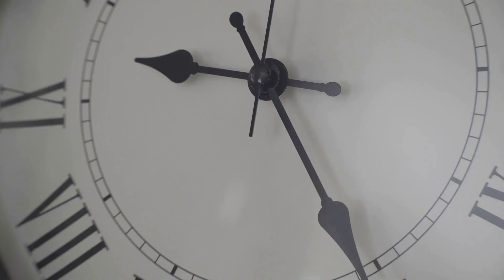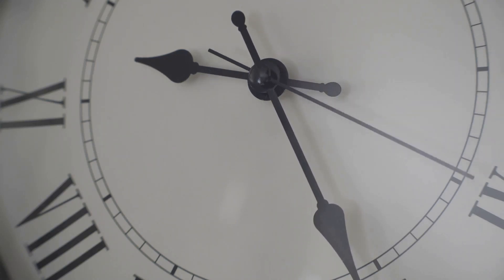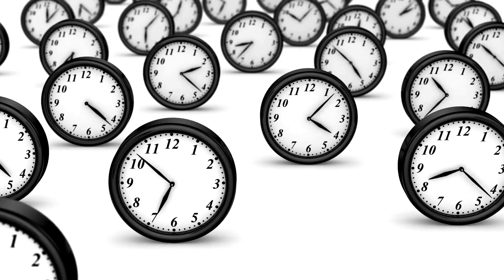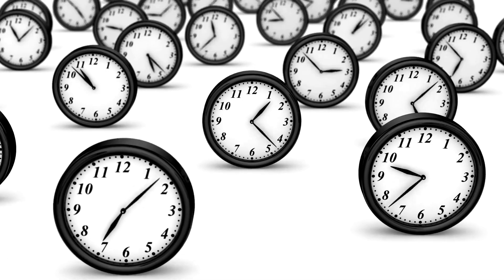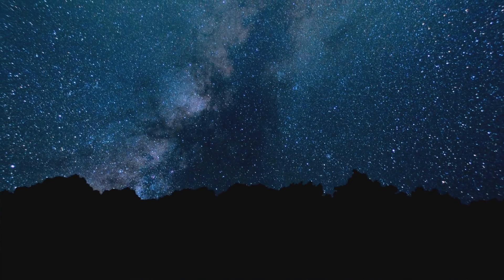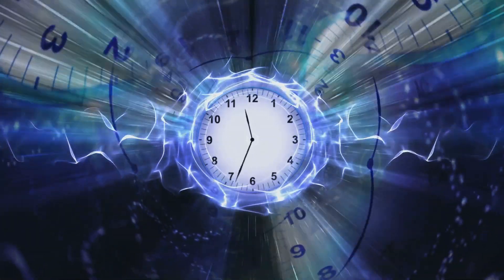We all experience time - it's the steady march of seconds, minutes, and hours that mark our days. We use clocks to measure it, calendars to track it, and we feel its passage as we age. Time seems like a fundamental part of the universe, but what if I told you that time is an illusion? That our perception of time as a straight line from past to future might be completely wrong.